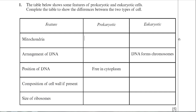Students I've spoken to about this question seem to find it confusing because they didn't quite know what to write in these boxes. That's where these videos can help improve your exam technique. The answer there was straightforward: absent for prokaryote, present for eukaryote.